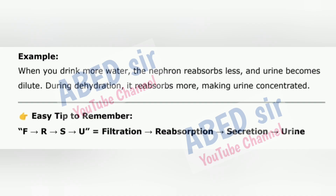Example: when you drink more water, the nephron reabsorbs less and urine becomes dilute. During dehydration, it reabsorbs more, making urine concentrated. Easy tip: FRSU = Filtration, Reabsorption, Secretion, Urine.